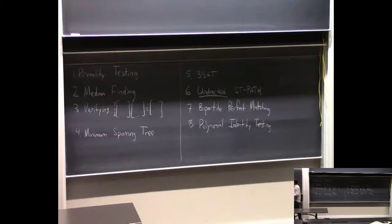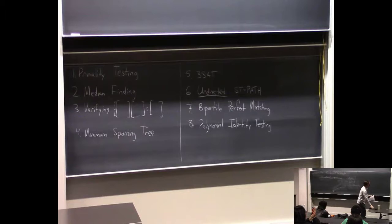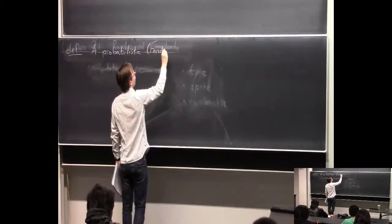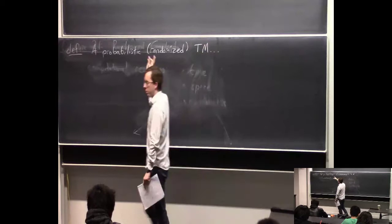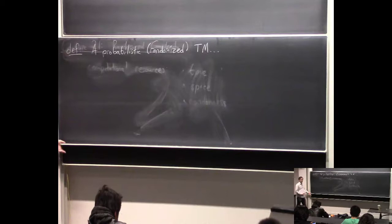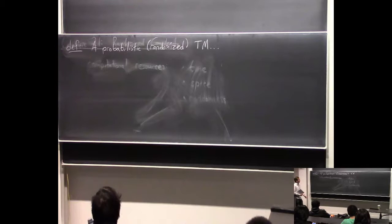Now the time has come to get into the details. We're going to define randomized computation and associated randomized complexity classes. A probabilistic or randomized Turing machine — these terms mean the same thing. How should we define a probabilistic Turing machine? We want to take normal Turing machines and give them access to a random number generator. Without loss of generality, you can just imagine they get the simplest kind of random number generation: they can ask for a fair coin flip — heads or tails — zero or one with probability half each. That turns out to be sufficient to simulate any more complicated model.